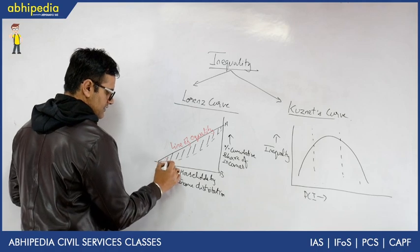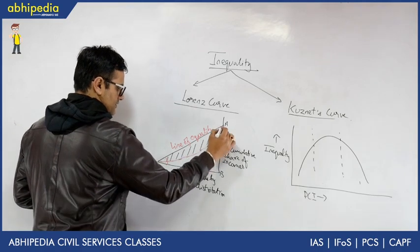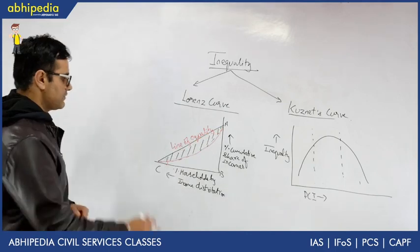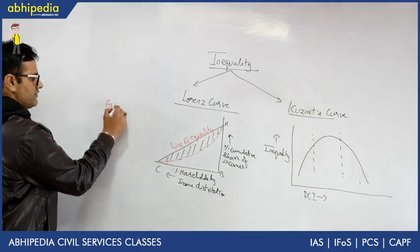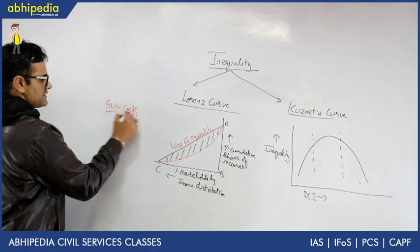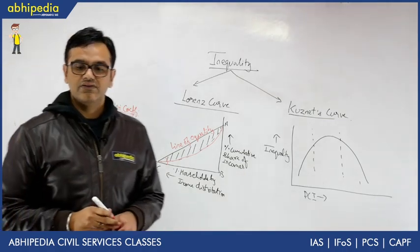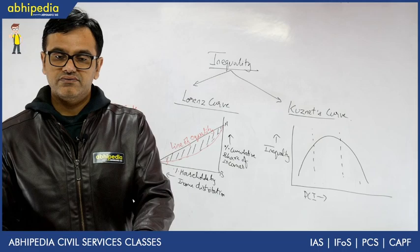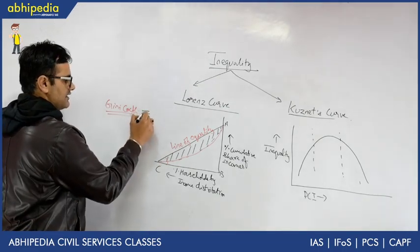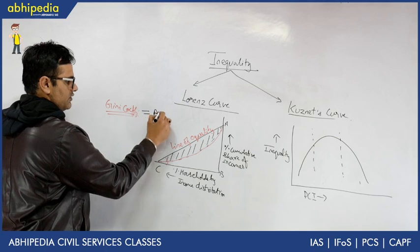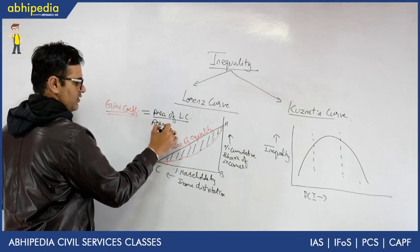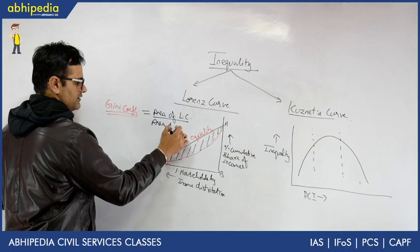This curve is the Lorenz Curve and the area which is shaded is used while calculating something called the Gini coefficient, which is the scale of inequality used in the Lorenz Curve. Within the scale of inequality, you calculate it as equal to the area of the Lorenz Curve divided by the area of triangle ABC.